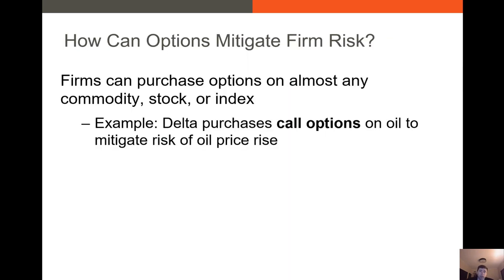So how can options mitigate firm risk? There are many ways beyond just stock options. The classic example: let's say we have a company like Delta, and a huge input cost for them is jet fuel, or oil for simplicity's sake. What they can do is buy call options that will pay off if the price of a barrel of oil rises. This helps them because if the price of oil and jet fuel rises, they have these options whose value will also rise. The call option increase in value will offset the rise in the price of jet fuel and oil — they're using call options to offset the increase in the price of oil.